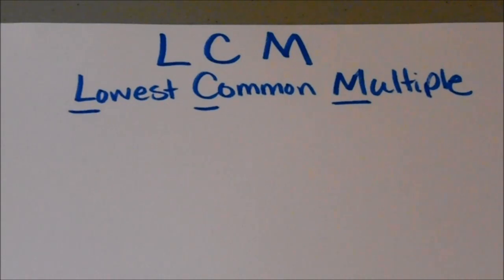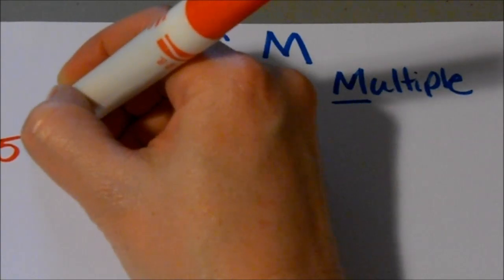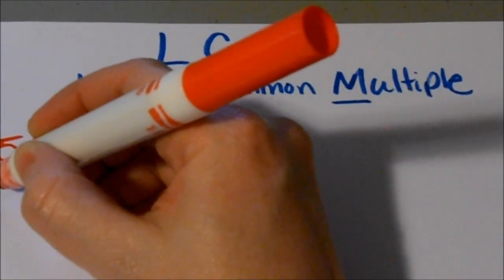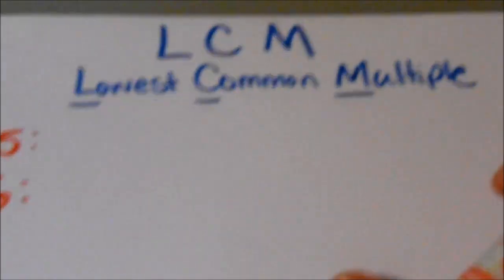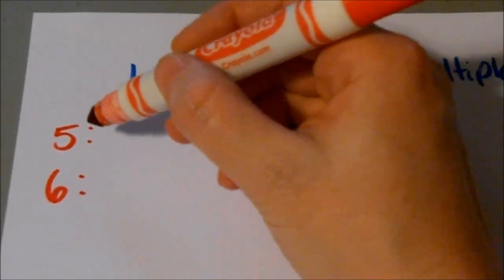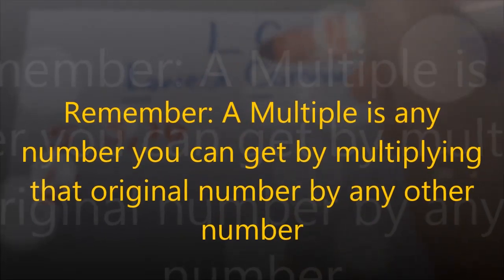So remember a multiple of a number means the number that you can get if you multiply something by it. So for example, if we have, if we're trying to find the lowest common multiple between 5 and 6, what I want to do is list the numbers that are multiples of both of these numbers. So for example, 5 times 1 is 5, so that's a multiple. 5 times 2 is 10, so 10 is a multiple.